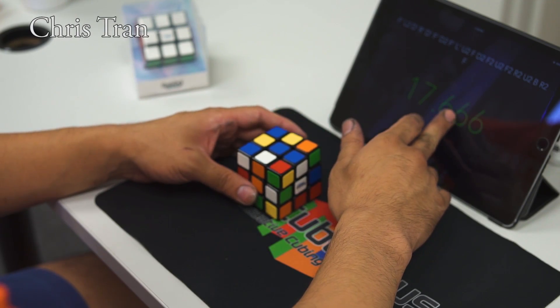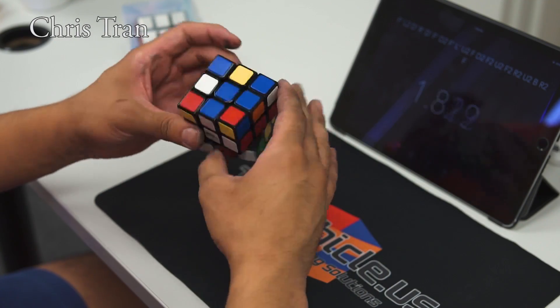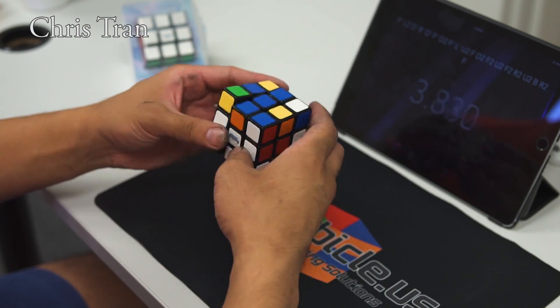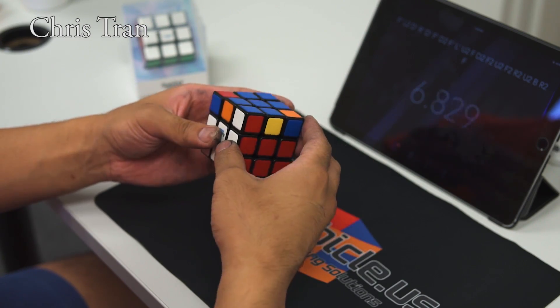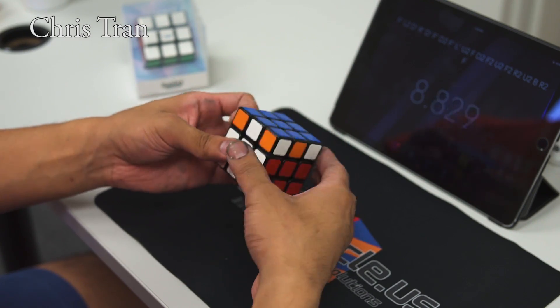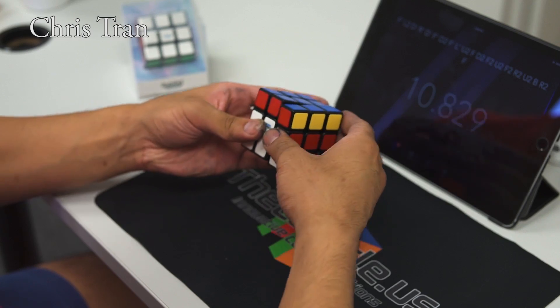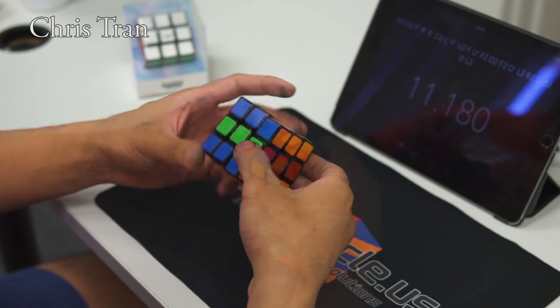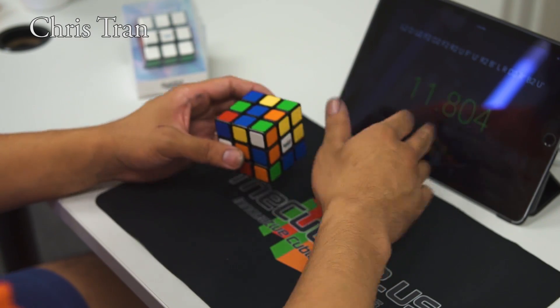The RSC features pieces that are similar to older GANS cubes. For example, the corners resemble that of the 356S. However, the center pieces are more squared off like the traditional Rubik's Cube. Also like the traditional Rubik's Cube, it has square tiles for the edges and corners.